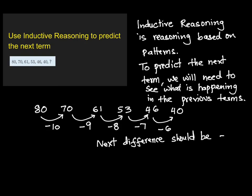So 40 minus 5 is going to give you 35. So that's the next term.